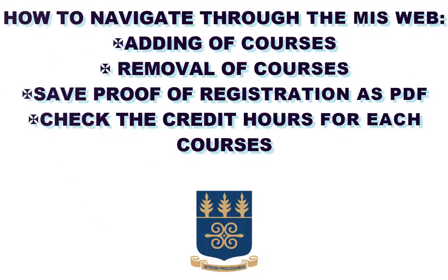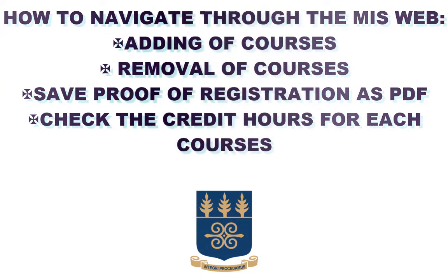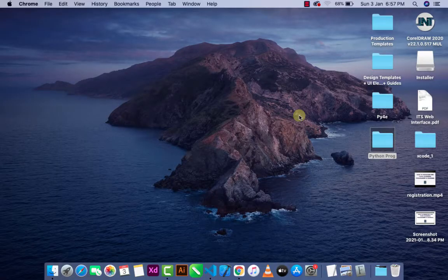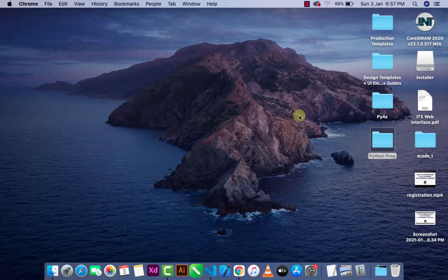Hello friends, welcome to Using Life. Today's tutorial we're going to learn how to navigate through the MS web. We'll be learning how to add a course, how to remove a course, how to save your full registration as PDF or even print it, and how to check the credit hours for each course. So let's get started.